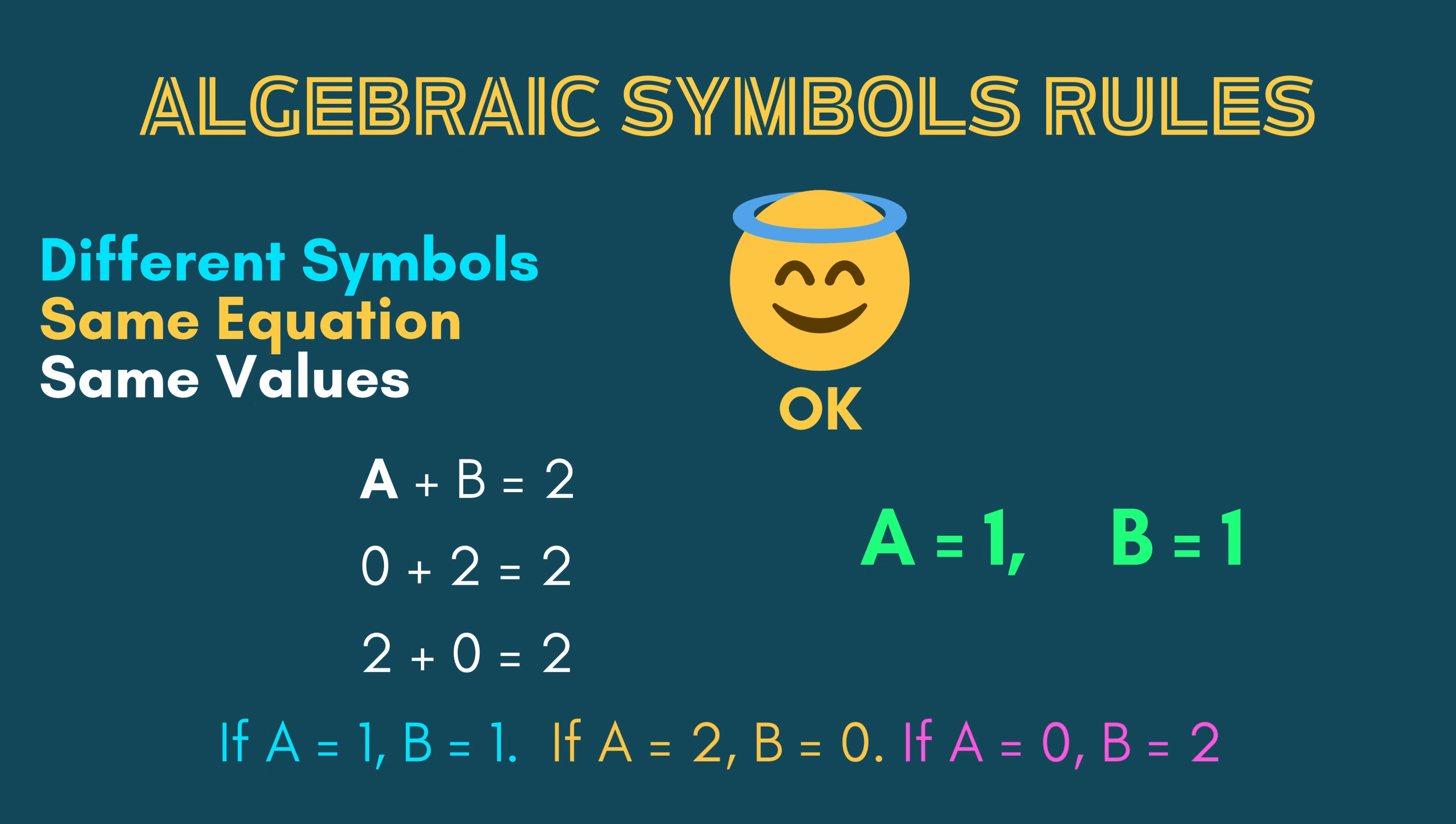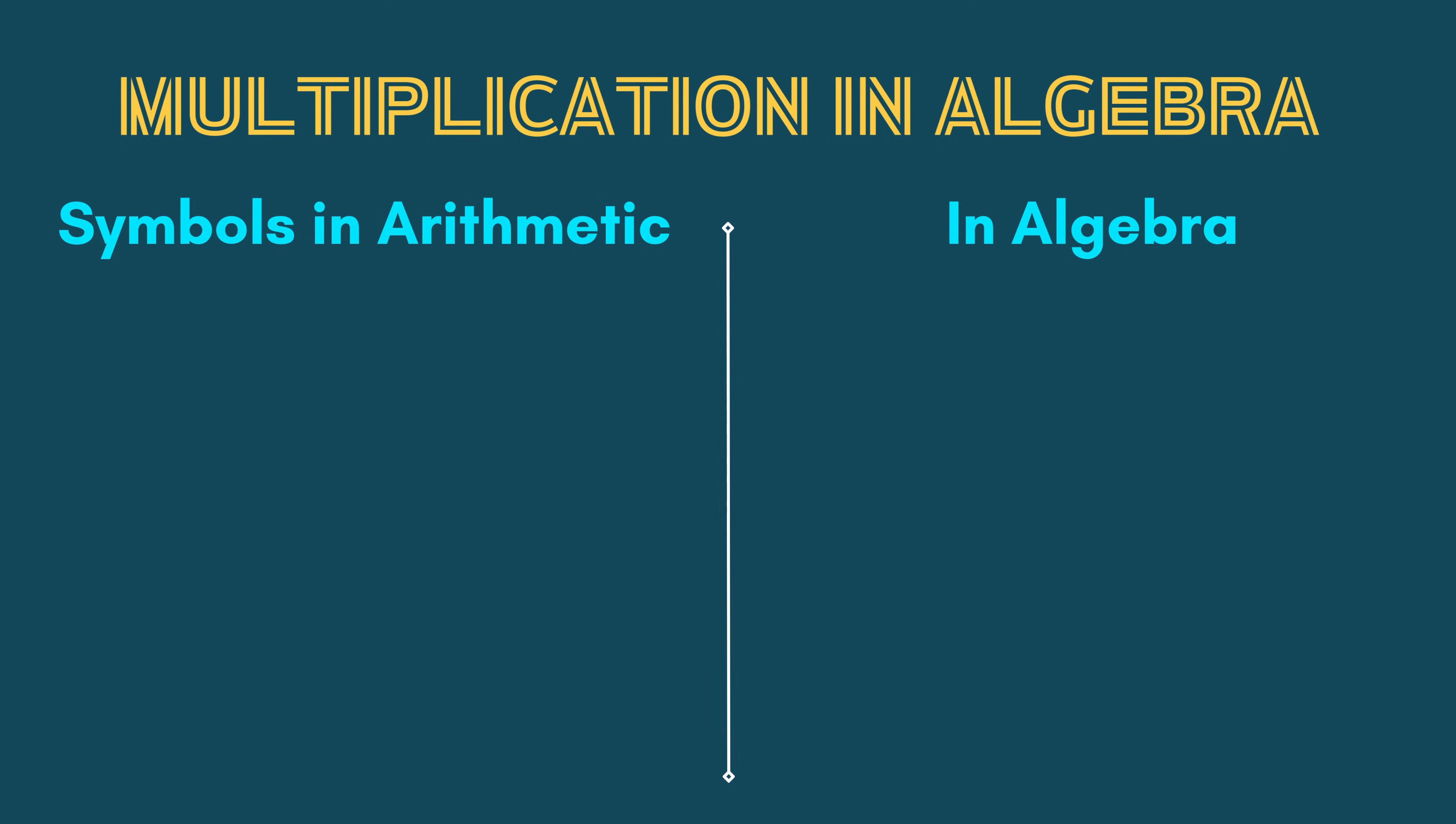In arithmetic, all addition, subtraction, multiplication, and division have the same status, meaning that they have symbols of plus, minus, multiply, and divide. And we carry out these operations once we see these symbols. However, in algebra, multiplication gets some special treatment.